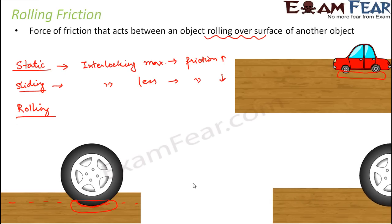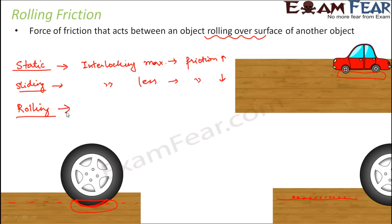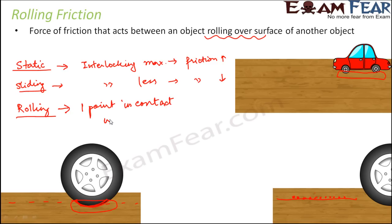In the case of rolling, at every instant of time there is just one point on the wheel which is in touch with the ground, and that one point is a different point every time. So imagine - in this case there is almost no interlocking at all. Therefore the friction offered during rolling is also negligible, because only one point is in contact with the surface at a time.